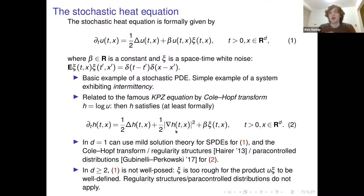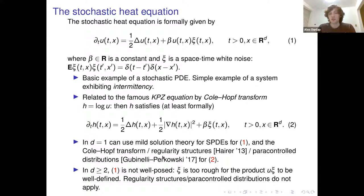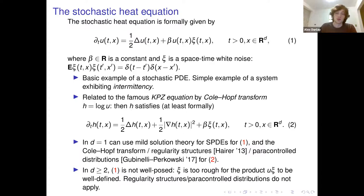The KPZ equation is very difficult to study because of this nonlinearity combined with the roughness of the solution — the solution will be too rough to make sense of this nonlinearity directly. One early attempt to understand KPZ was via the stochastic heat equation: in spatial dimension one, you can solve this using mild solution theory for stochastic PDEs, take the log, and call it a solution to KPZ. Other approaches include regularity structures or paracontrolled distributions.